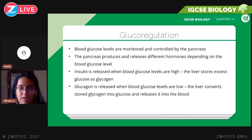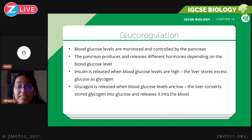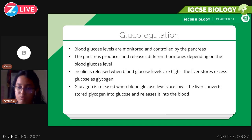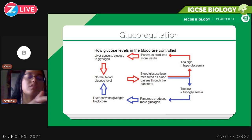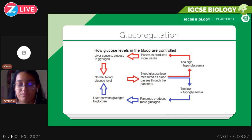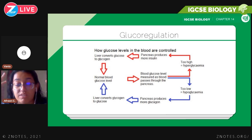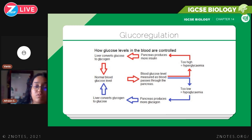When there's too much glucose in your blood, insulin is released to convert glucose into glycogen and store it. When there's too little glucose, glucagon is released to convert glycogen into glucose and release it back into the blood. The diagram shows this cycle starting at normal blood glucose levels — too high triggers insulin and glycogen storage; too low triggers glucagon secretion and glycogen-to-glucose conversion.